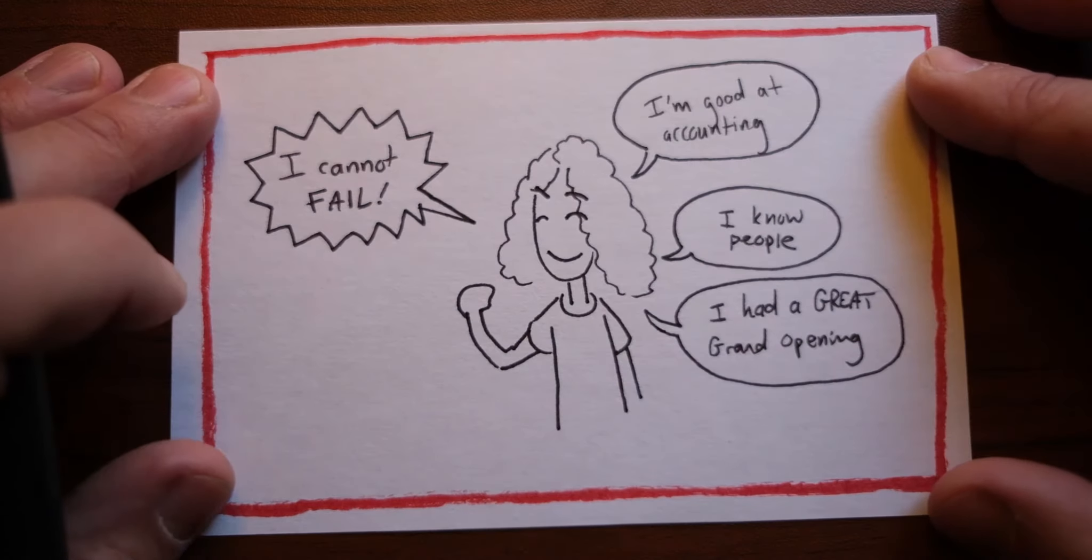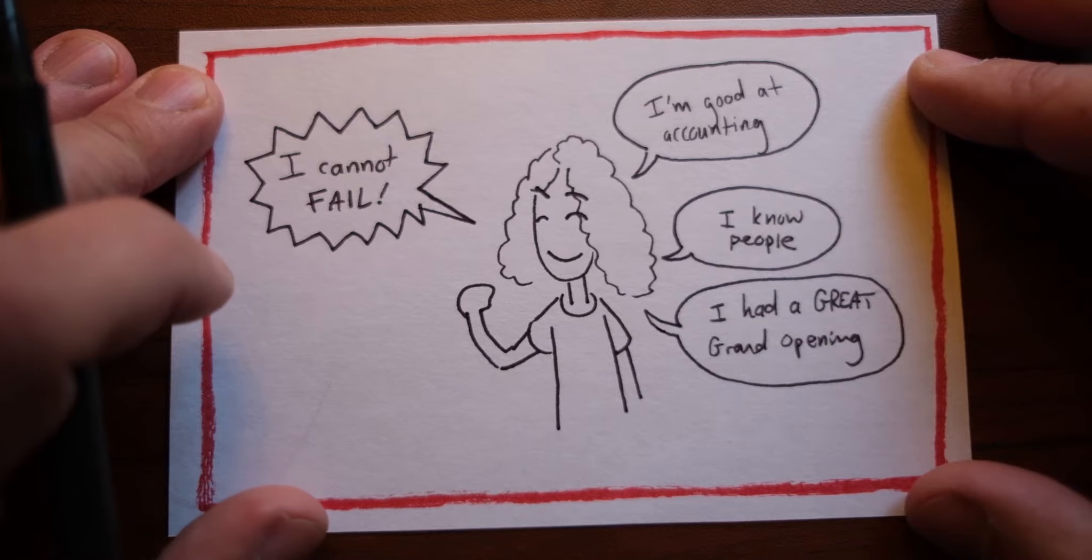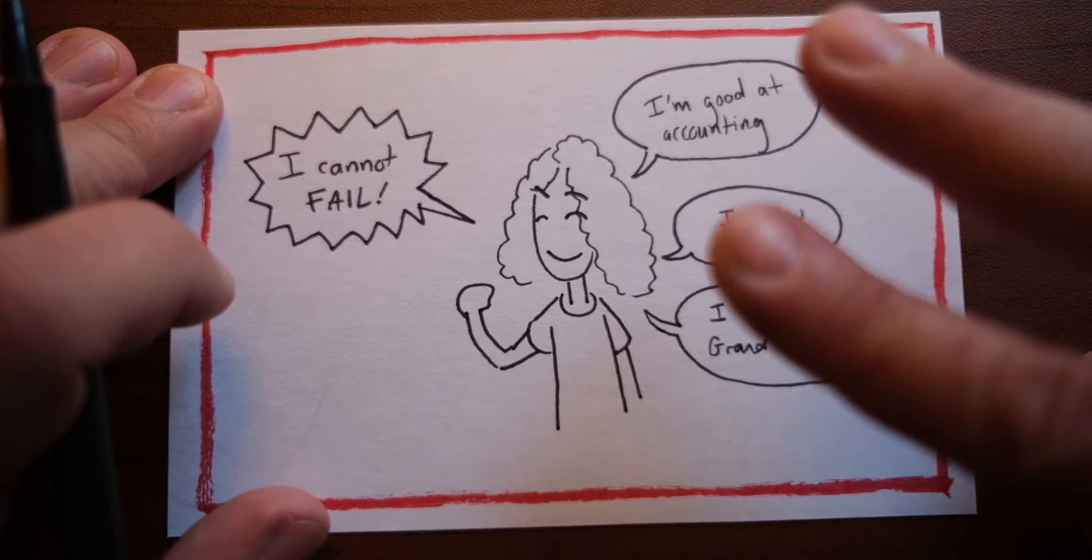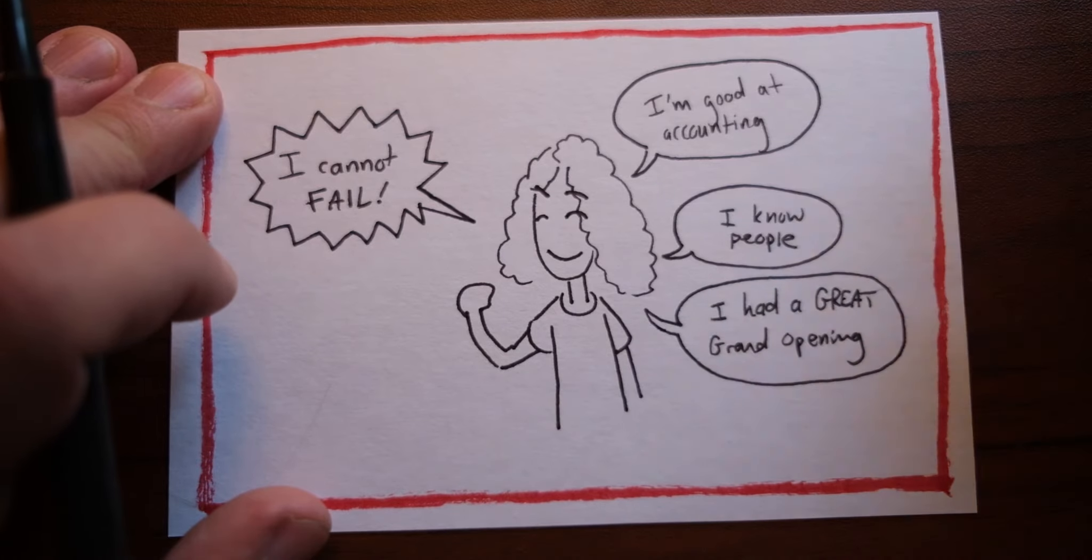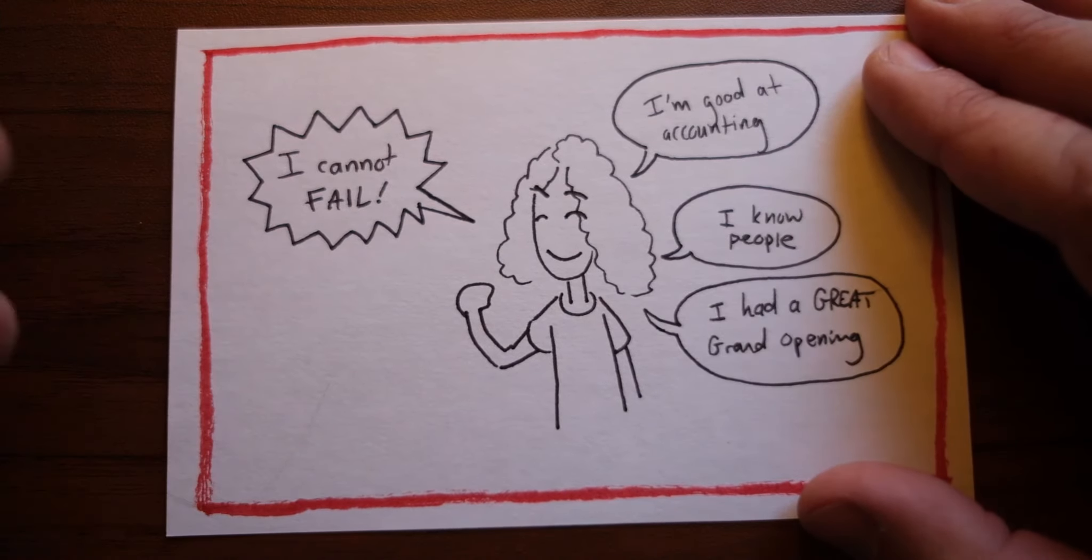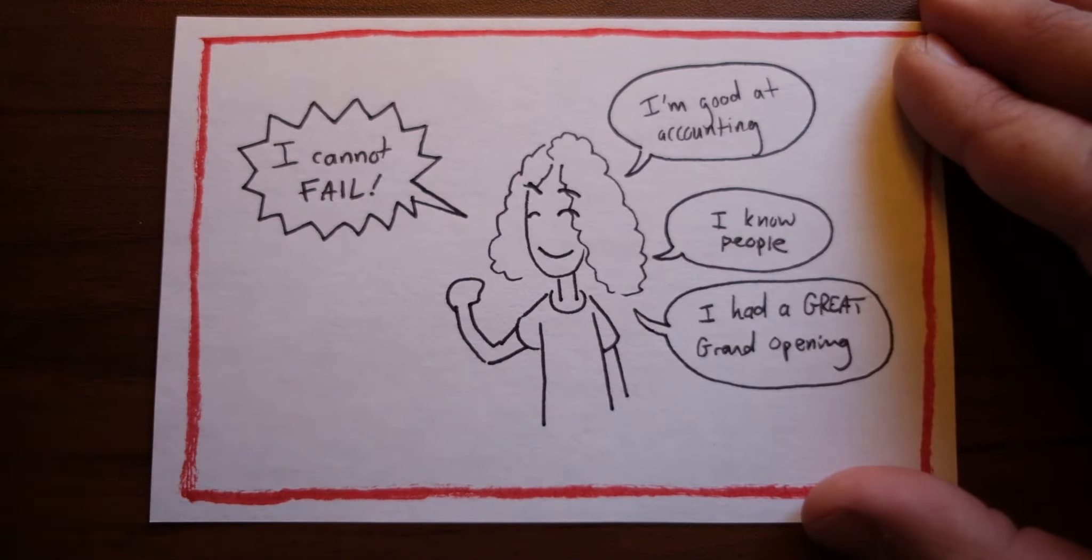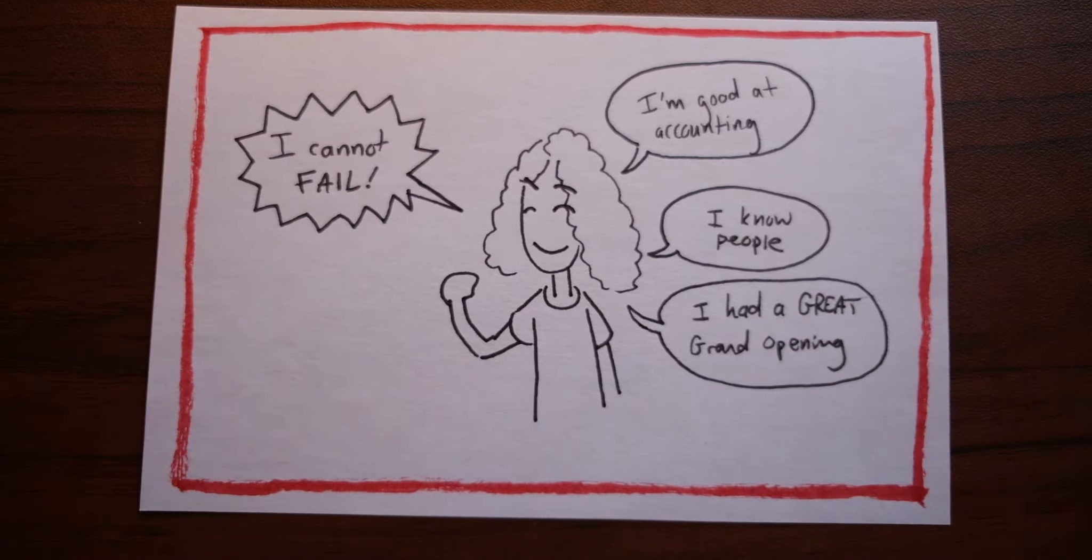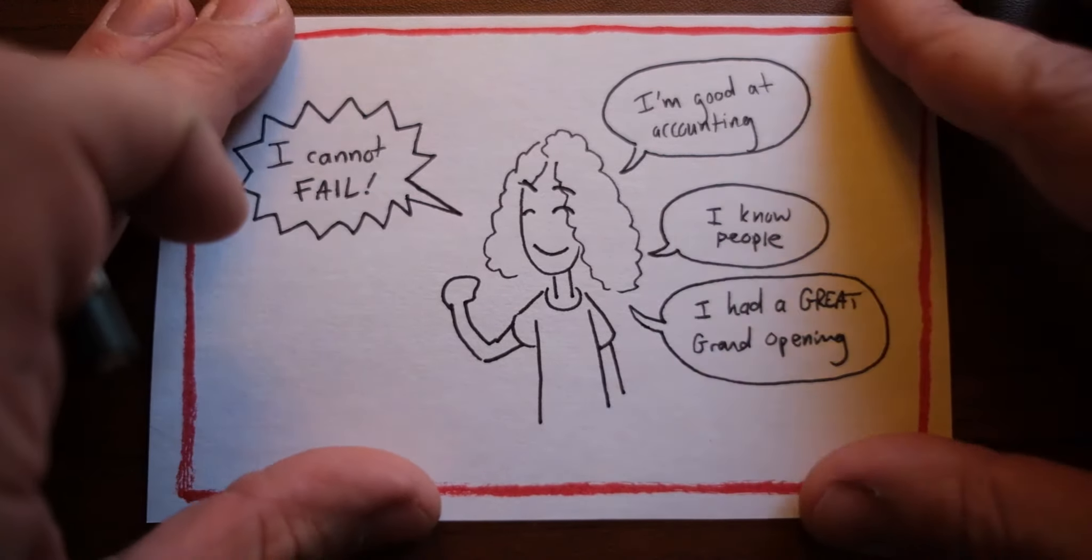So, Latasha was a consulting CPA, a super high performing individual, and was even on the Survivor show twice. She realized she wanted something more and turned to Chick-fil-A. She went through the vetting process and believed she was ready to go. She had this internal monologue of, I'm good at accounting. I know people. I had this great grand opening. I literally cannot fail. This is the front stage that she was presenting.